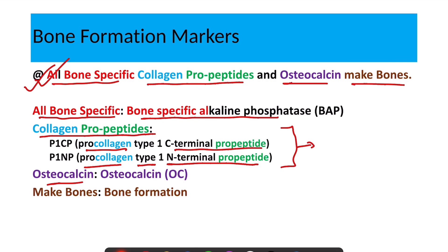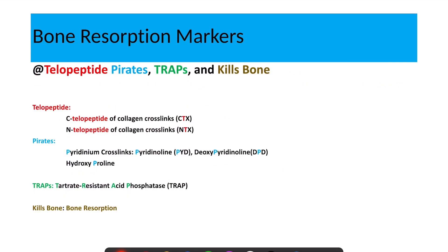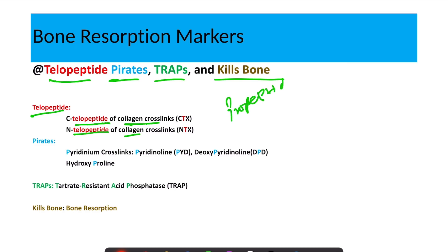Now let's move to the markers of bone resorption. The mnemonic for bone resorption markers is: 'Telopeptide Pirates Traps and Kills Bones.' Telopeptide stands for the C-telopeptide and N-telopeptide of the collagen cross-links. Importantly, while propeptides mark bone formation, telopeptides are markers of bone resorption.